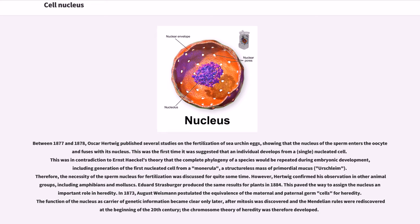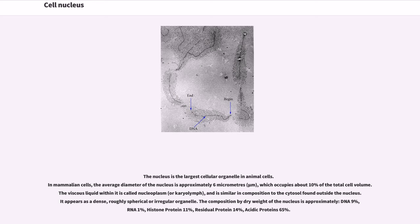The nucleus is the largest cellular organelle in animal cells. In mammalian cells, the average diameter of the nucleus is approximately 6 micrometers, which occupies about 10% of the total cell volume. The viscous liquid within it is called nucleoplasm, or karyolymph, and is similar in composition to the cytosol found outside the nucleus. It appears as a dense, roughly spherical or irregular organelle. The composition by dry weight of the nucleus is approximately: DNA 9%, RNA 1%, histone protein 11%, residual protein 14%, acidic protein 65%.